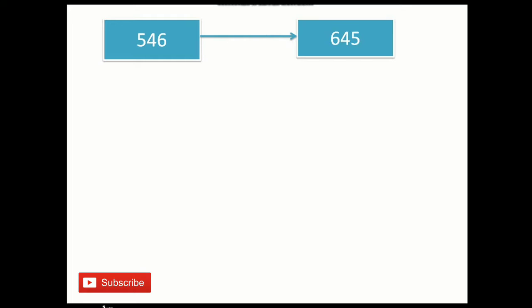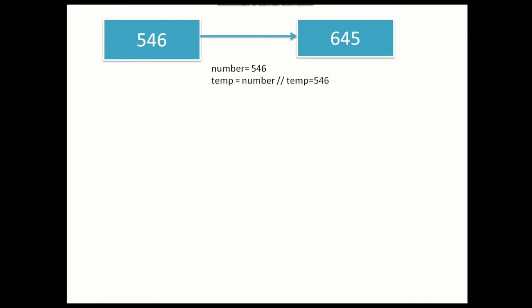Let's see step by step. Our number is 546. We'll store the number in a temp variable. Now, just for printing the reverse number it is not necessary to store it in a temp variable, but for palindrome it can be used. We'll also take a variable called sum, initialized to 0, which will actually hold the reverse number. We named it sum because the logic sums up the remainders to find the reverse number.